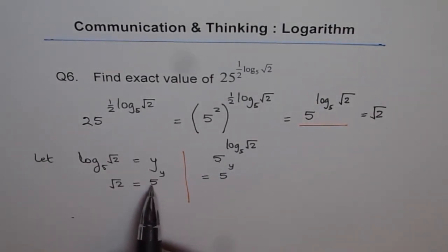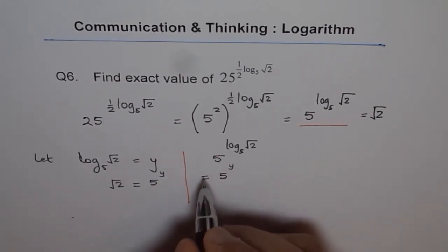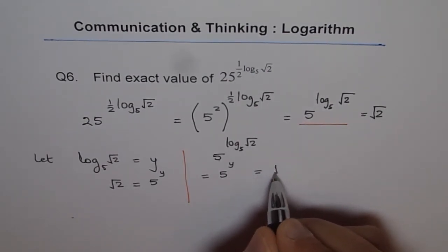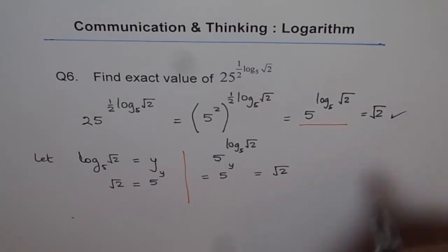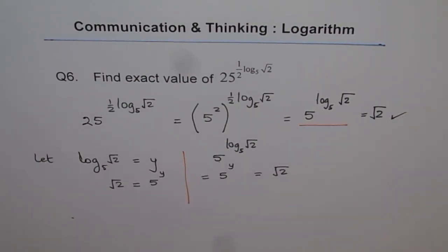But just now we saw that 5 to the power of y is actually equals to square root 2. Therefore, we can write this as equals to square root 2. And this is the proof for what I wrote here. So that is how you prove this identity. It is also a law of logarithm. Thank you.